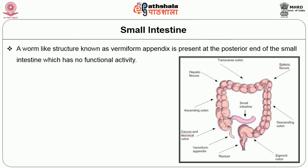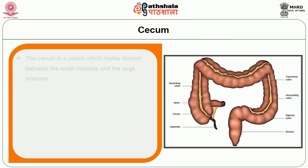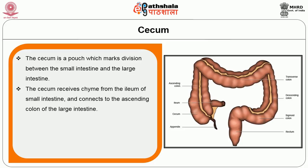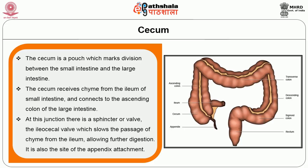A worm-like structure known as the vermiform appendix is present at the posterior end of the small intestine and has no functional activity. The cecum is a pouch that marks the division between the small intestine and the large intestine. It receives chyme from the ileum of the small intestine and connects to the ascending colon of the large intestine. At this junction there is a sphincter or valve called the ileocecal valve, which slows the passage of chyme from the ileum allowing further digestion. It is also the site of appendix attachment.